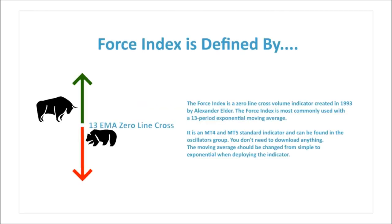The force index is a zero-line cross volume indicator created in 1993 by Alexander Elder. It is most commonly used with a 13-period exponential moving average. It is an MT4 and MT5 standard indicator found in the oscillators group — you don't need to download anything. The moving average should be changed from simple to exponential when deploying the indicator.